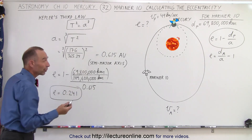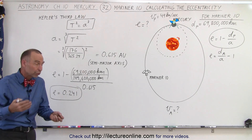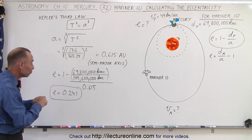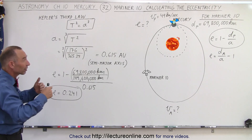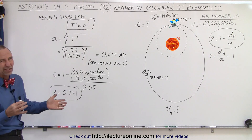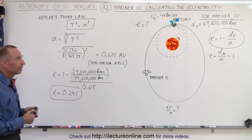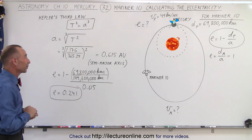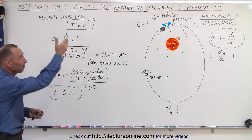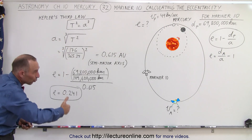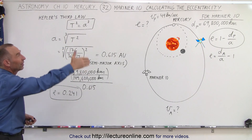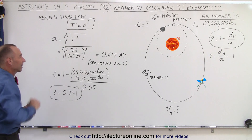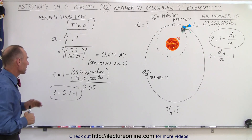Compared to the eccentricity of Mercury, which is 0.206, the eccentricity of Mariner 10's orbit is actually greater — more eccentric — because it needs to reach far enough out so that the orbit takes exactly two Mercury years.